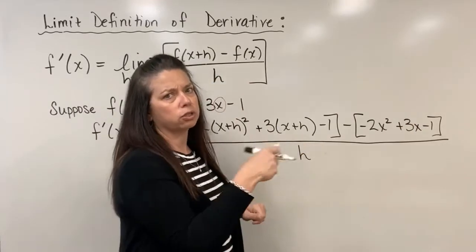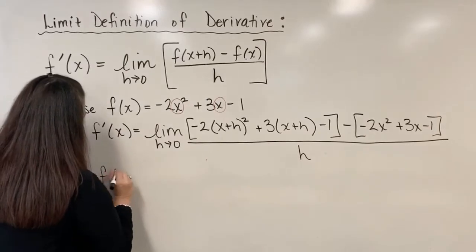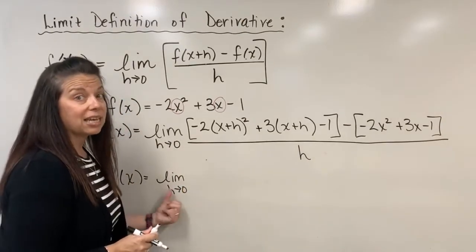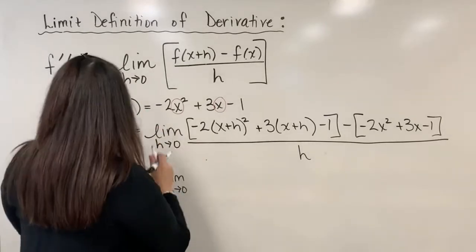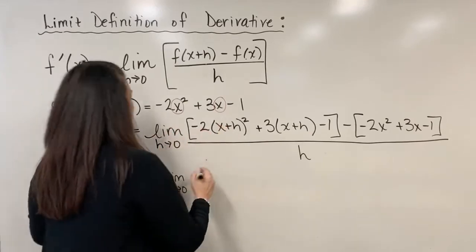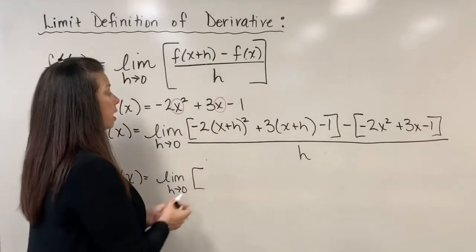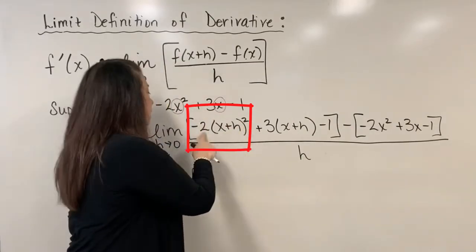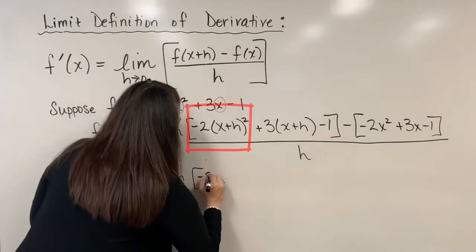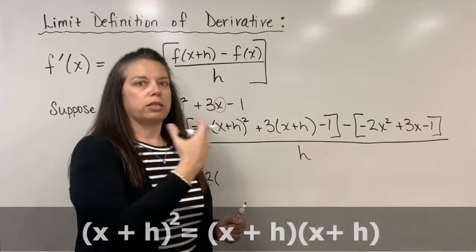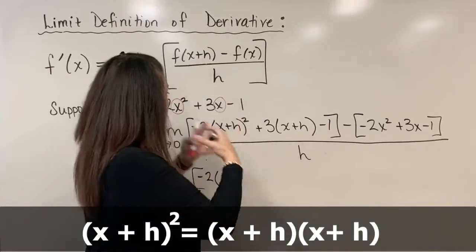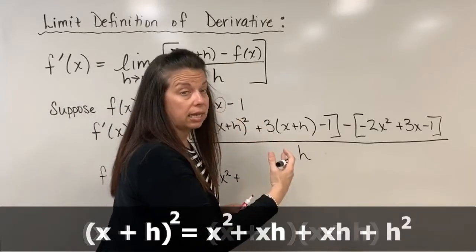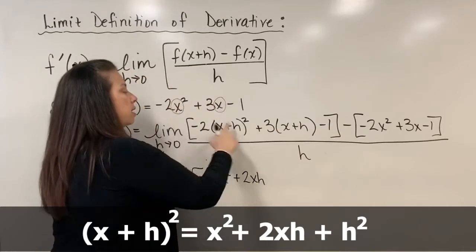So f prime of x equals the limit as h approaches 0. It's really important to keep writing down all this notation. In the numerator, I need to remember order of operations: take care of squaring first, then distribute the negative 2. Imagining x plus h quantity squared as x plus h times x plus h, when I distribute I get x squared plus 2xh plus h squared — all still being multiplied by the negative 2.